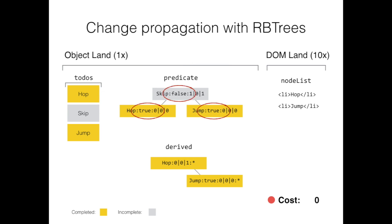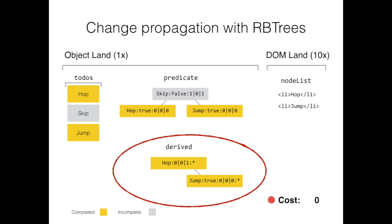The second tree is the derived tree. It contains nodes only for items that pass the predicate function — in this case, only the completed to-dos. The derived tree is sorted by the order of items in the predicate tree. In fact, the keys of items in the derived tree are the indices of the items in the predicate tree.